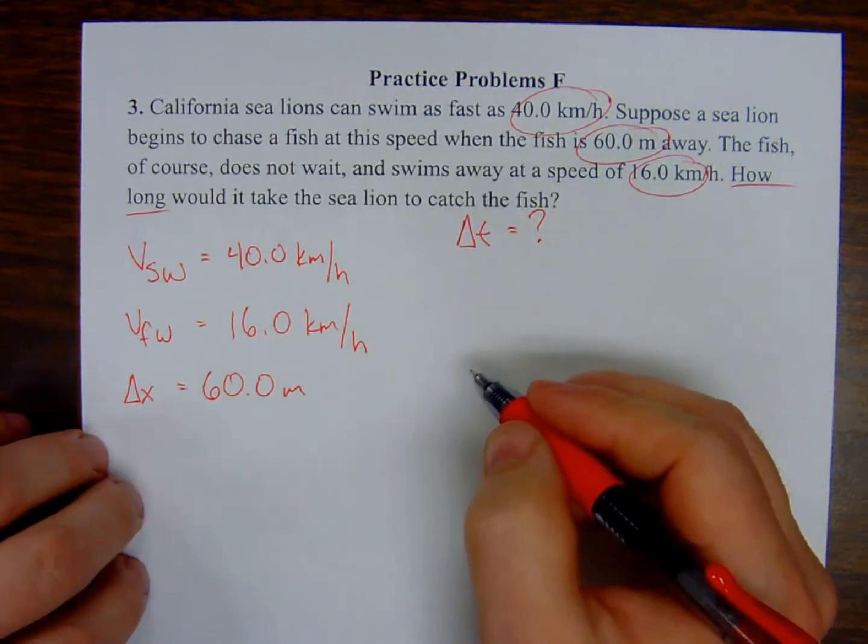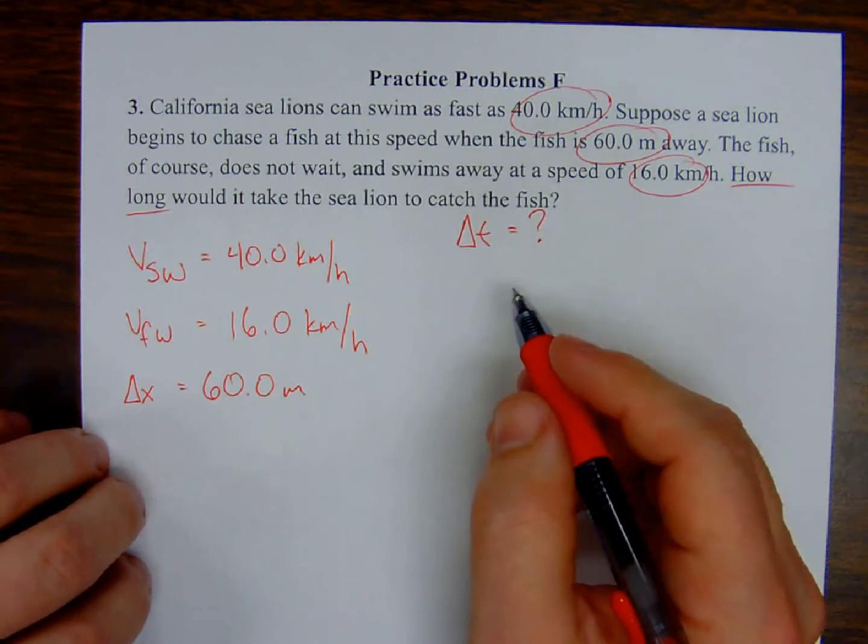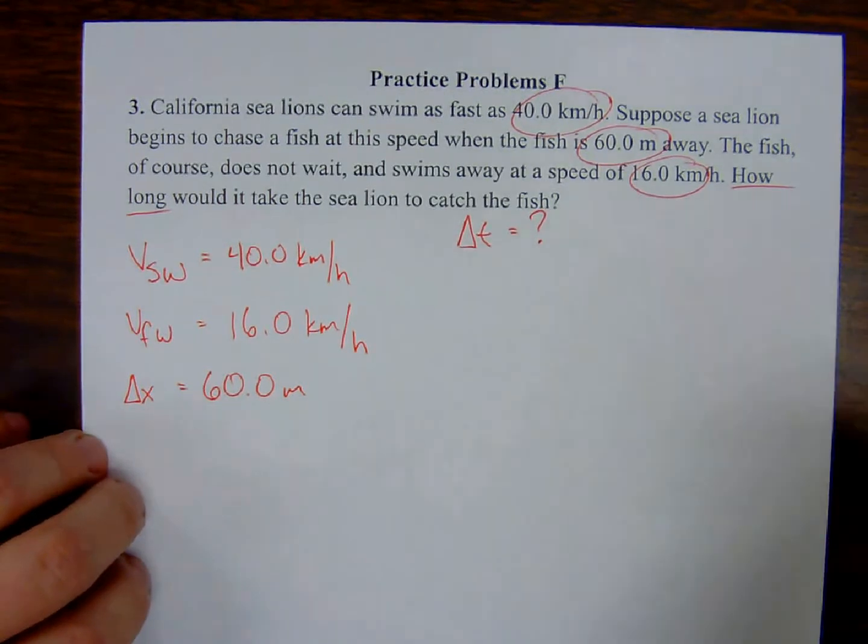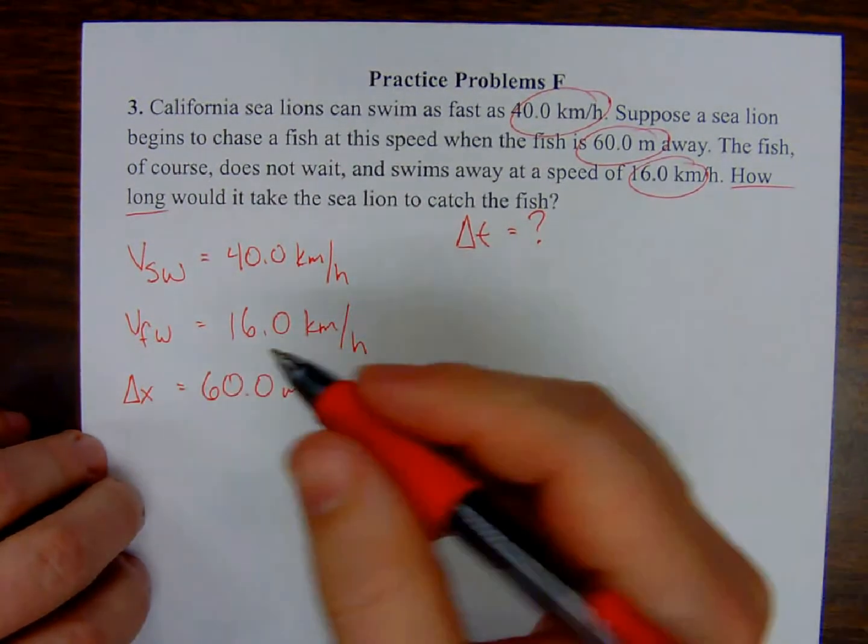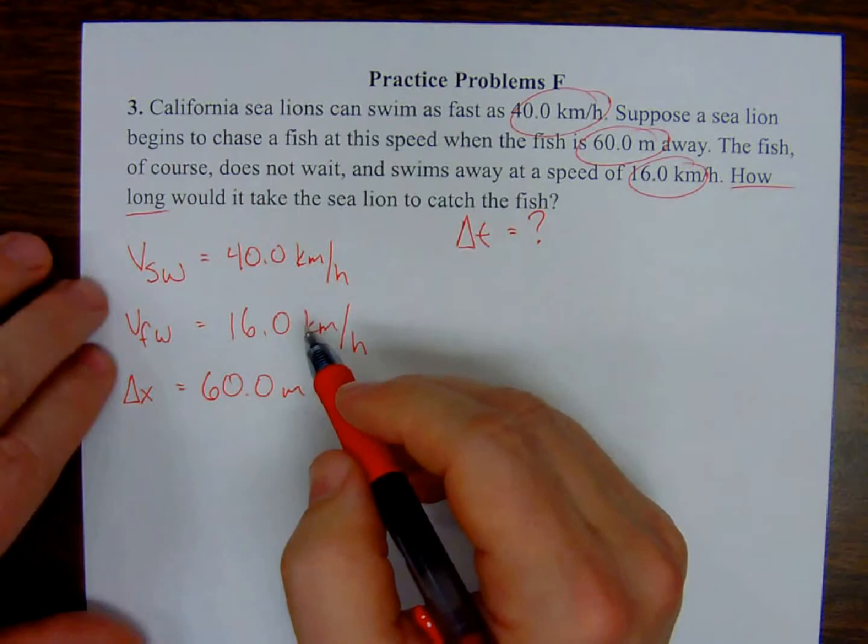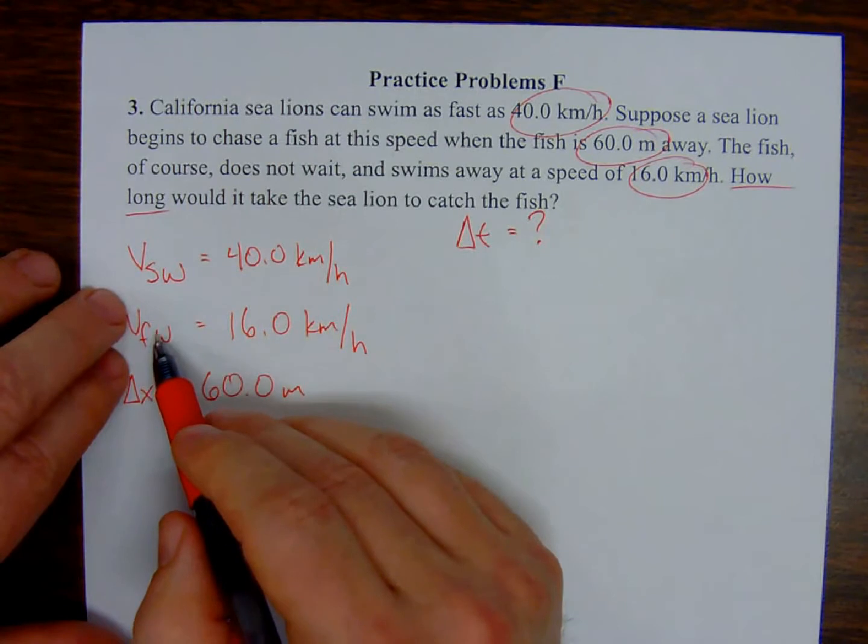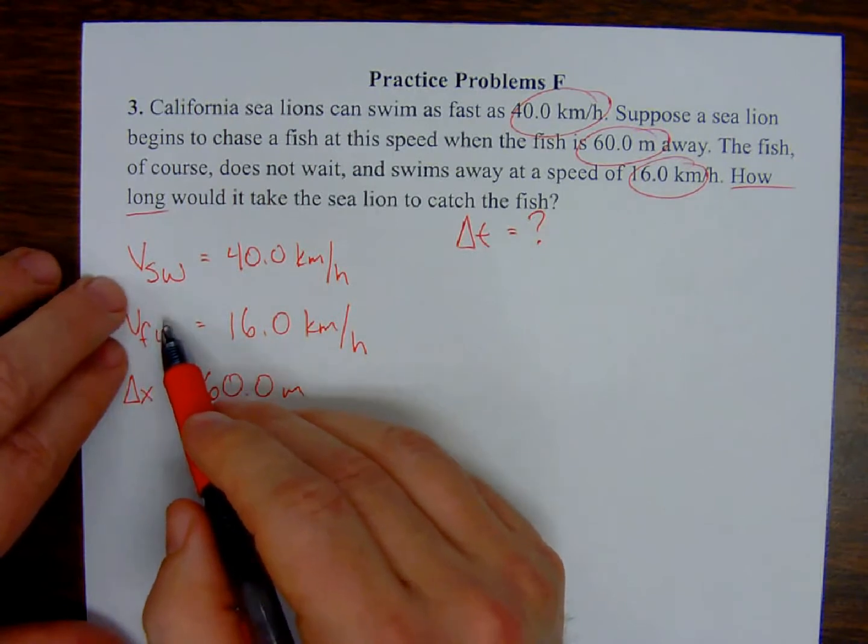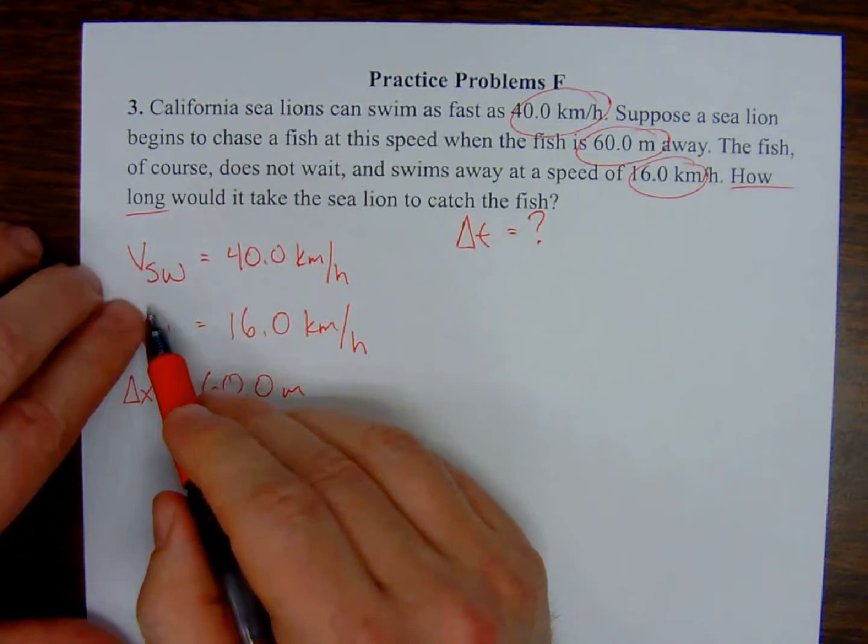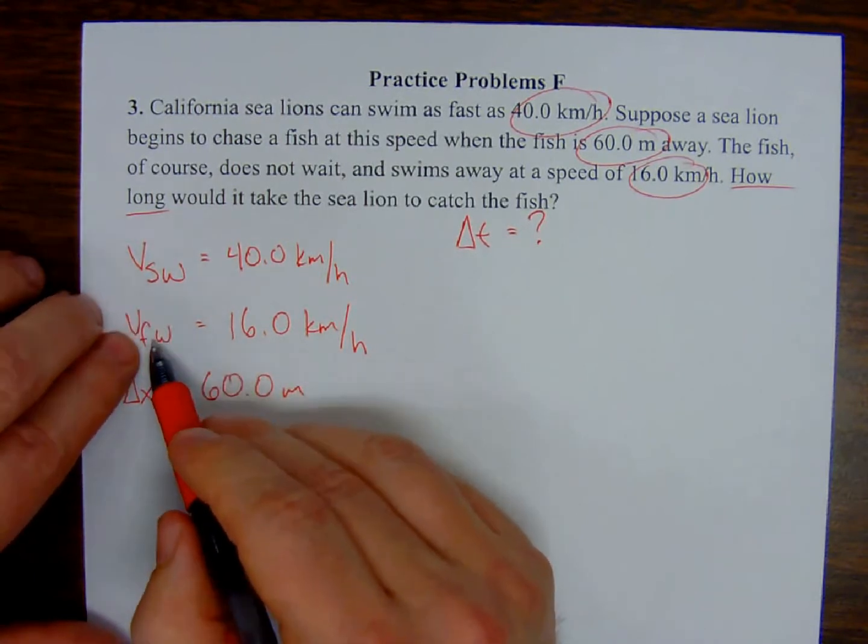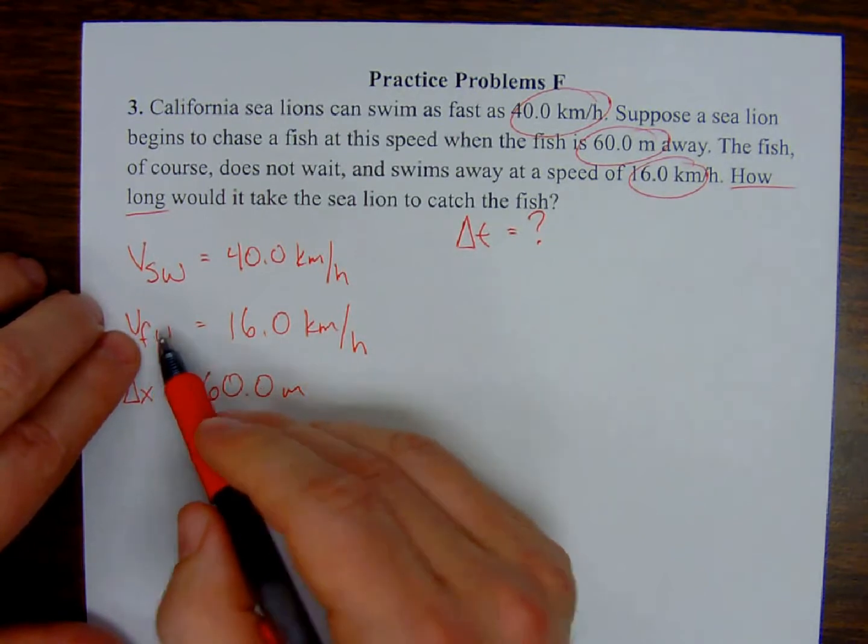We know we are doing relative motion problems and so what we want to find out here is not the velocity of the sea lion, not the velocity of the fish, but the velocity of the sea lion with respect to the fish. Because the sea lion is chasing the fish.